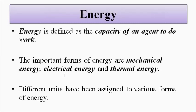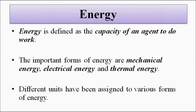Energy is defined as the capacity of an agent to do work. The important forms of energy that come into play in power generation are mechanical energy, electrical energy, and thermal energy. Depending on which kind of power plant is used, these energies need to be represented in their own units. The basic principle of power generation is to convert energy from a source into mechanical energy using a prime mover, then convert it into electrical energy using an alternator, which is an AC electrical generator.